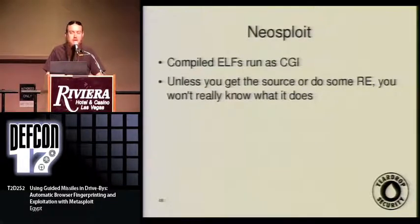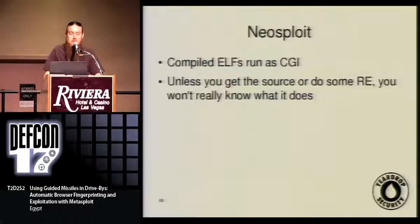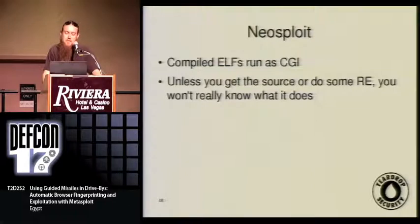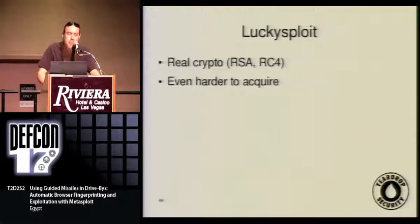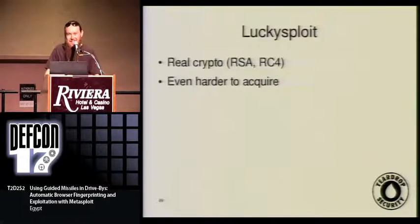NeoSploit is sort of an oddity among exploit packs — it's an ELF compiled binary that runs as a CGI. Getting a hold of the source code proved very difficult. As a penetration tester, it's not a good idea to run code when you don't know what it does. Lucky Exploit is pretty incredible though — they implemented RSA and RC4 in JavaScript. Unfortunately it's still really hard to get, and the legitimate way of getting any of these exploit packs is to send $4,000 to some guy in Russia. No thanks.